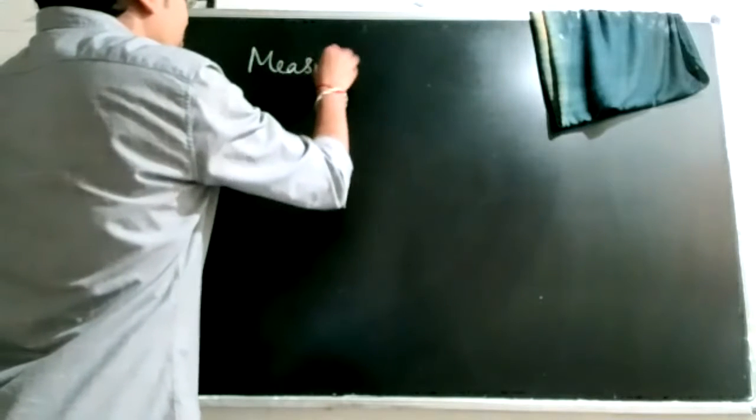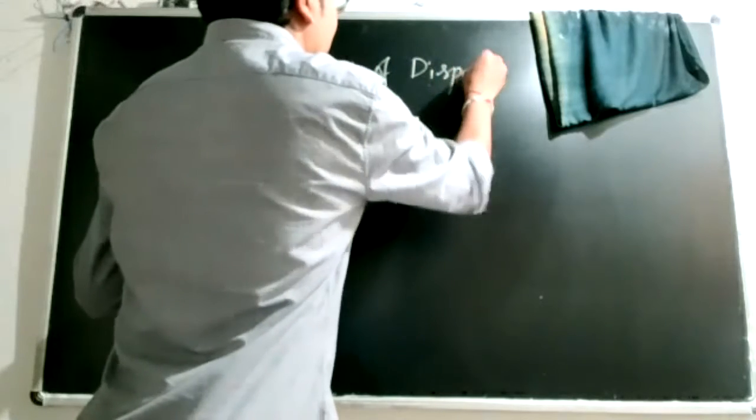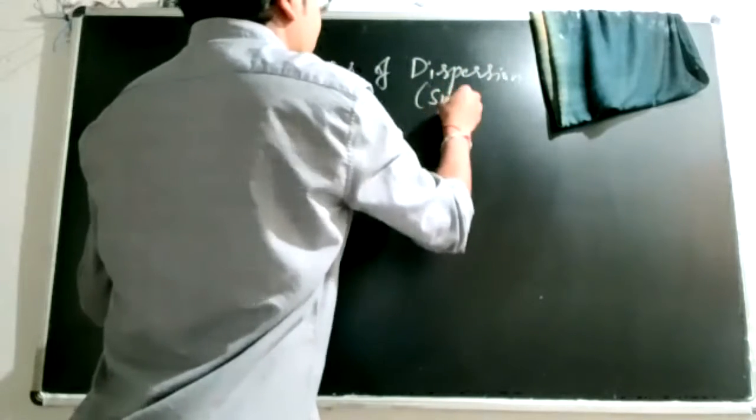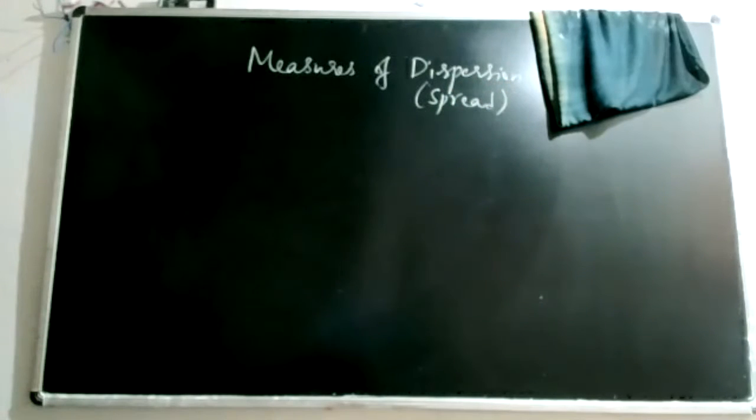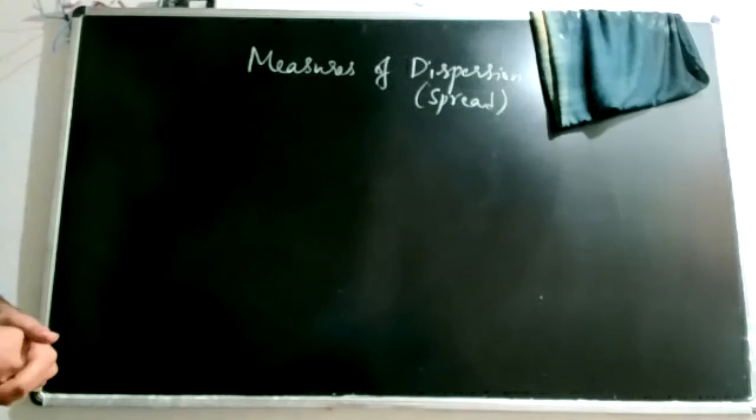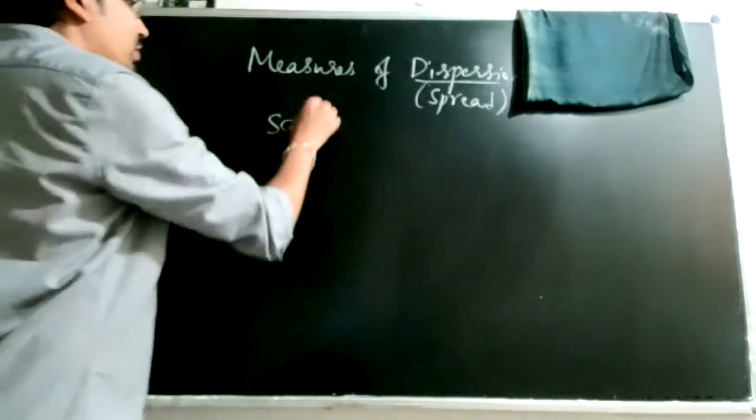Good evening. We've been talking about analysis of univariate data, looking into various measures of central tendency as well as position. Today we'll talk about two more such measures called measures of dispersion, also called measures of spread or deviation, and later we'll talk about measures of skewness and kurtosis. If time permits, we'll also look into the analysis of bivariate data.